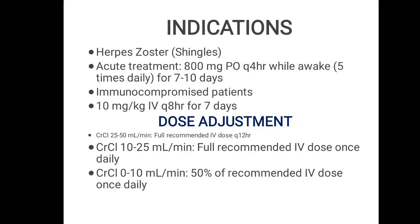For herpes zoster, the acute treatment dose is 800 mg per oral every 4 hours for 7 to 10 days. In immunocompromised patients, the dose is 10 mg per kg IV every 8 hours for 7 days. Dose adjustment is required because acyclovir is renally excreted.